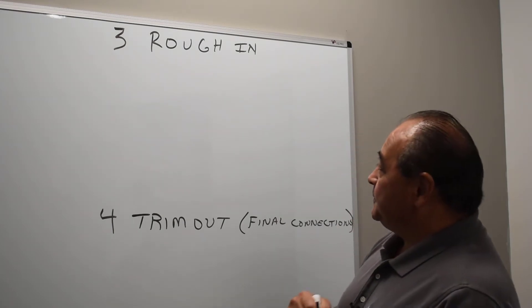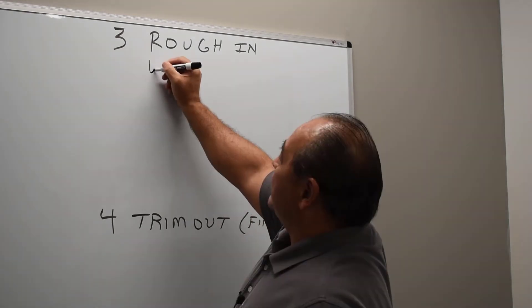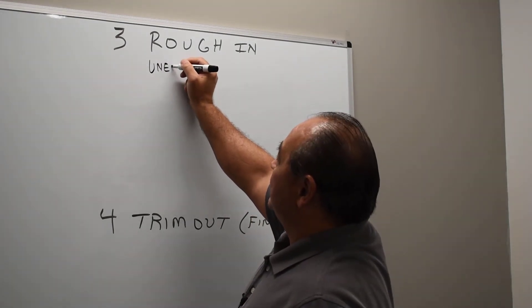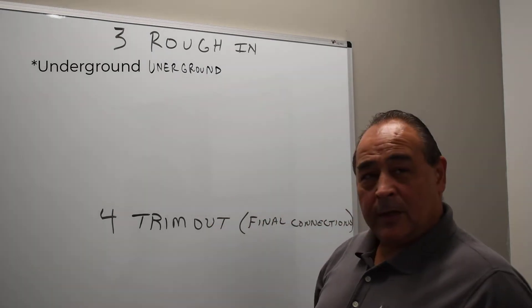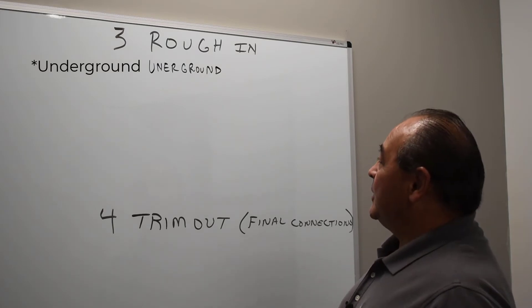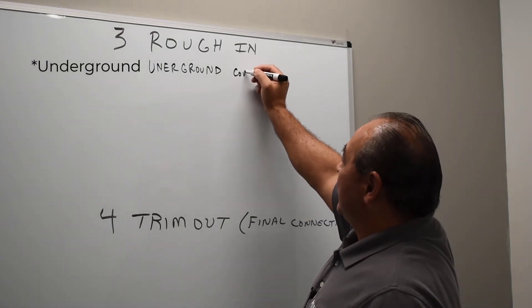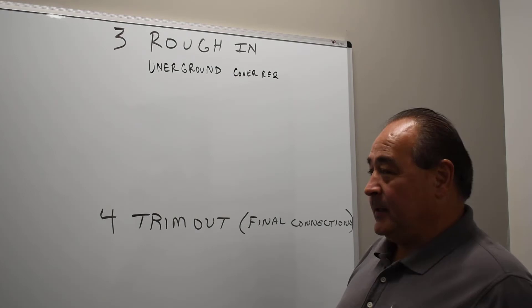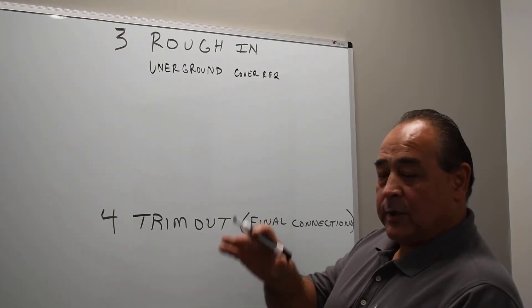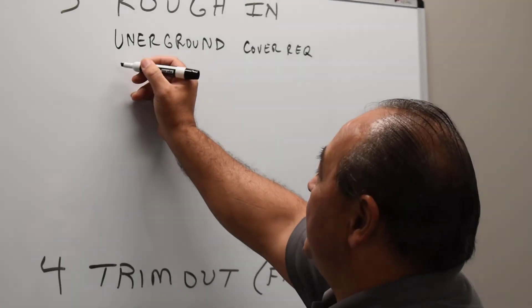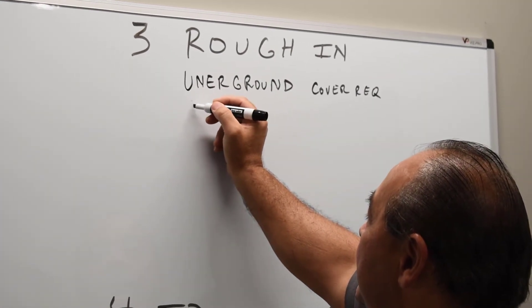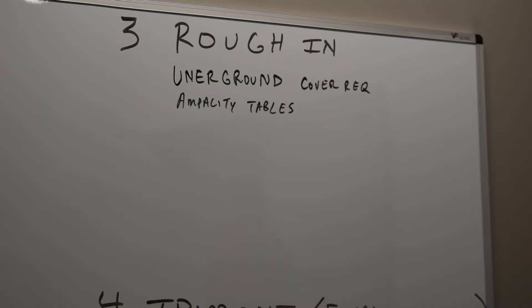So Rough-In starts out like this. We get into how deep does the ditch need to be for whatever it is, whether it's cable or conduit, whether it's PVC or rigid. Underground cover requirements. Now that is not a ditch depth as much as it is how much cover needs to be on top of the different conduits or cables. And then the most famous one is the ampacity tables. In this four-year time period, you will be officially trained how to use the ampacity tables. That's sizing your conductors for the different ampacities.